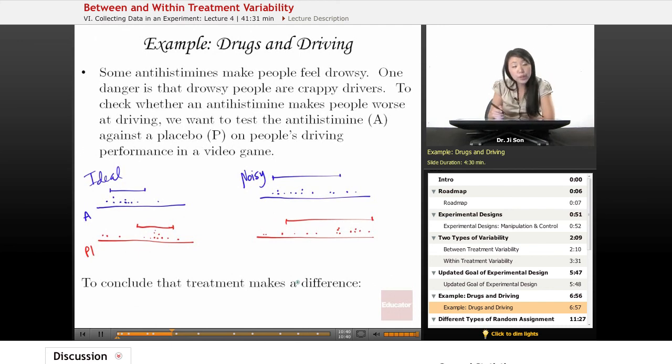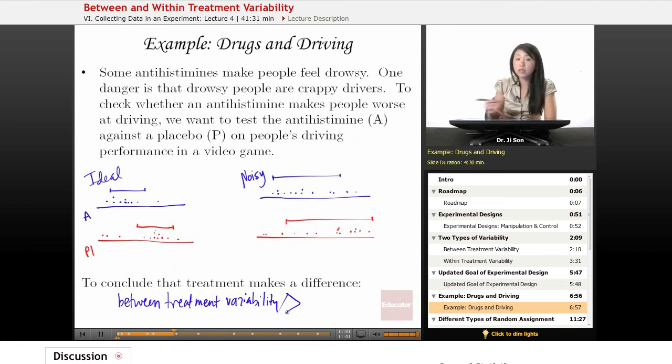To conclude that a treatment makes a big enough impact, what you really have to see is that the between treatment variability is greater, is overcoming the within treatment variability.